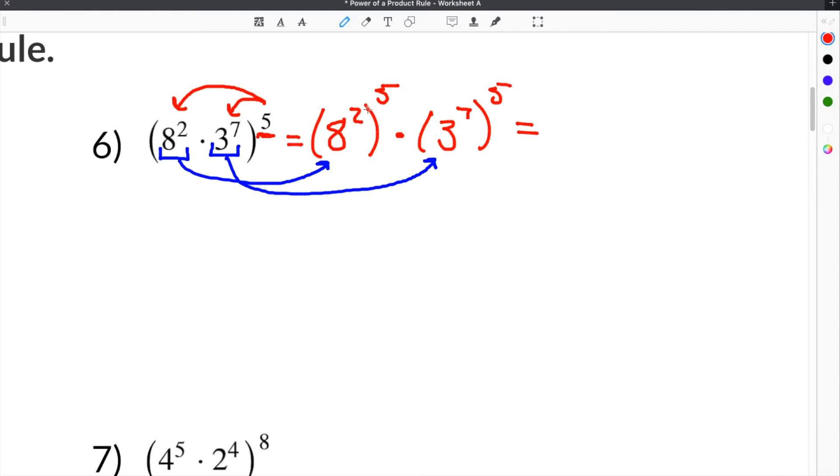You will remember that when we have a parenthesis in between two exponents, that means you're going to multiply those exponents together. So that parenthesis means 2 times 5, or this parenthesis means 7 times 5. So we keep the base of 8 and then do 2 times 5 for the exponents, which is 10. Then you do the same thing with the 3. You keep the 3 as the base and then do 7 times 5, which is 35. And that's your answer.